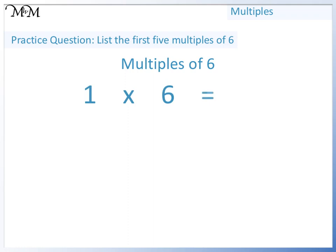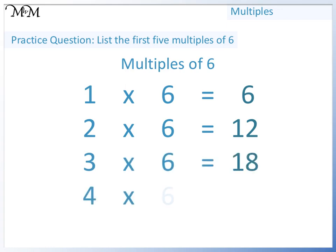1 times 6 equals 6. 2 times 6 equals 12. 3 times 6 equals 18. 4 times 6 equals 24. 5 times 6 equals 30.